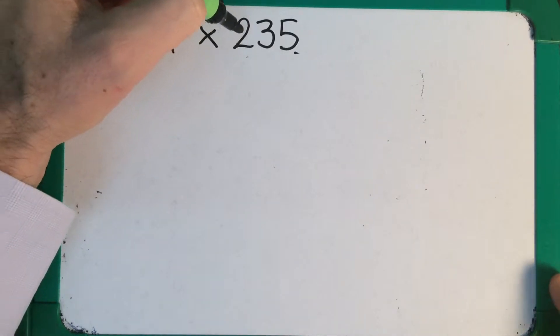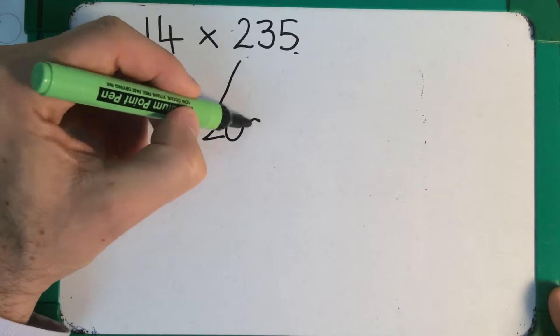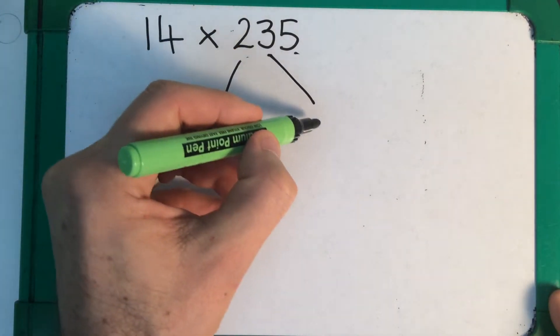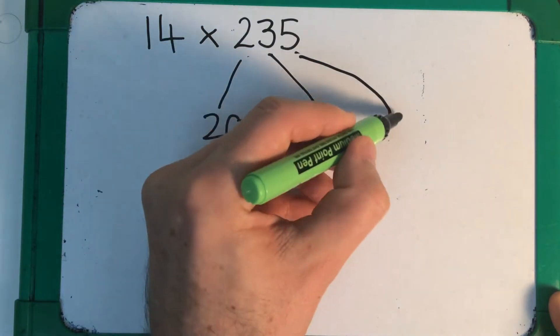So I know that this number 235 is made up of 200. The 3 is in the tens so it's worth 30. The 5 is in the ones so it's worth 5.